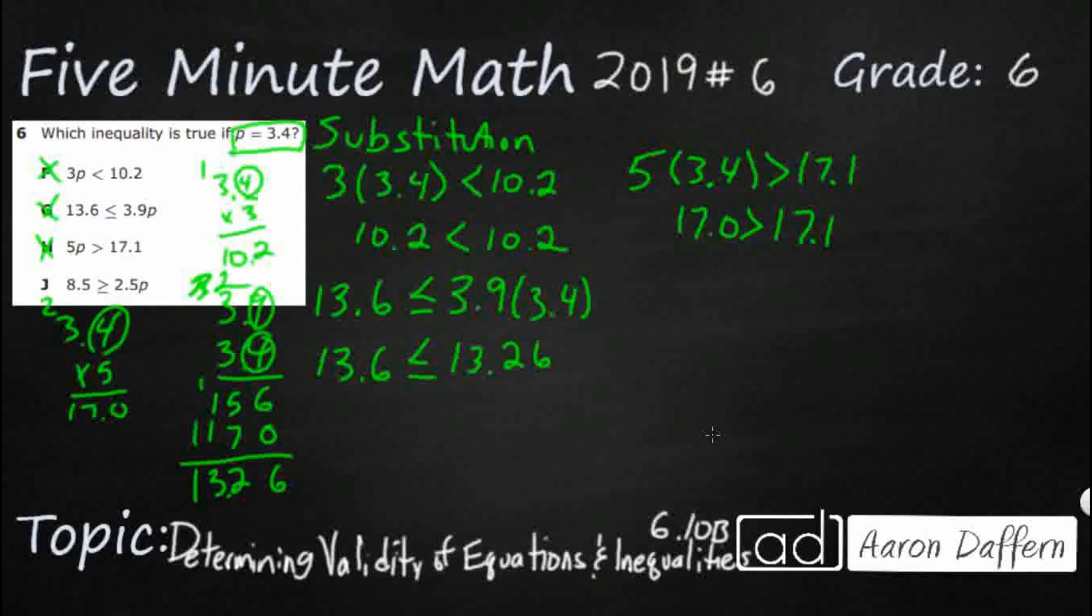So let us hope it is going to be J. We've got 8.5 greater than or equal to 2.5 times this 3.4 we've been using again and again. So let's do a little multiplication here. We've got 2.5, 3.4. So that's 20. That's 10. So we've got 15.